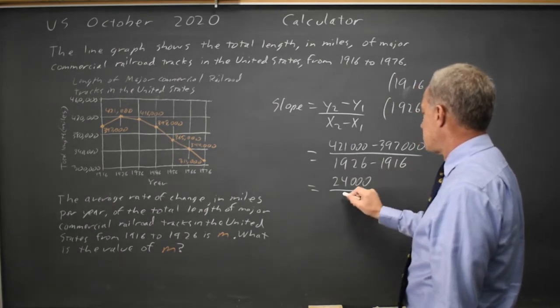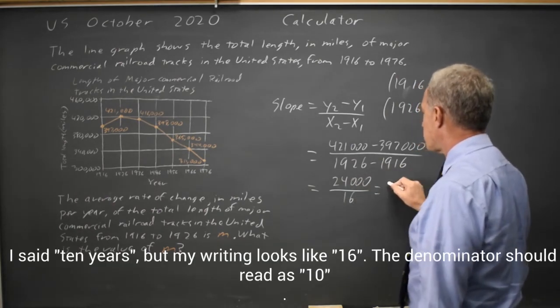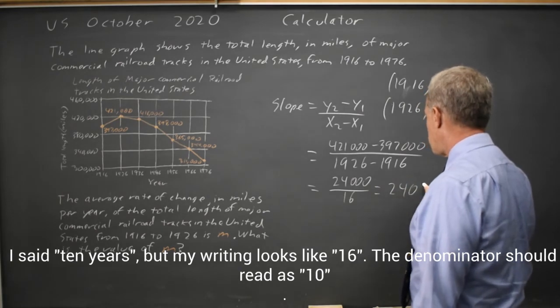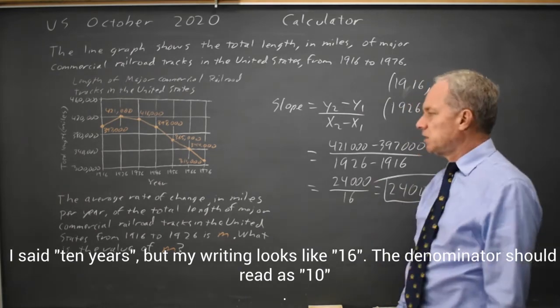1926 minus 1916 is 10 years, so that's 2,400 is the answer we would grid in.